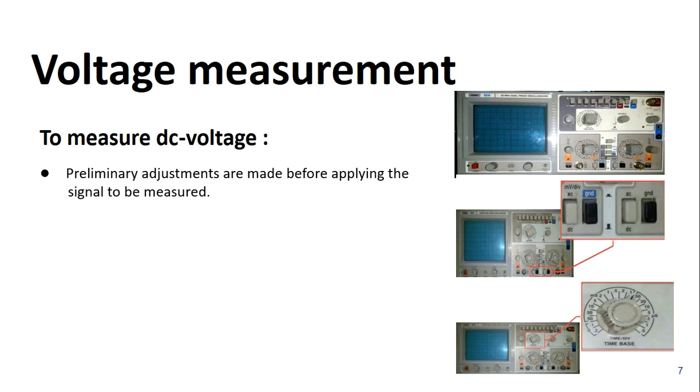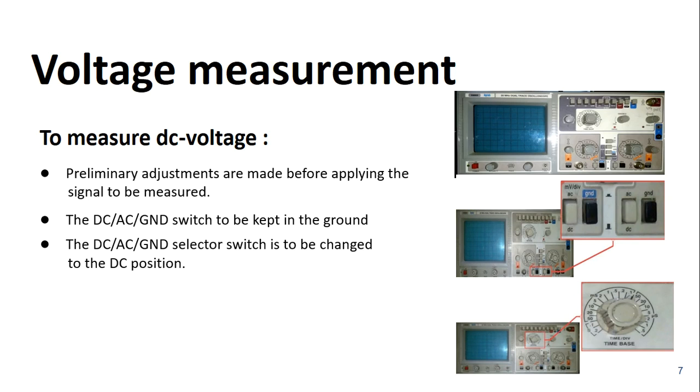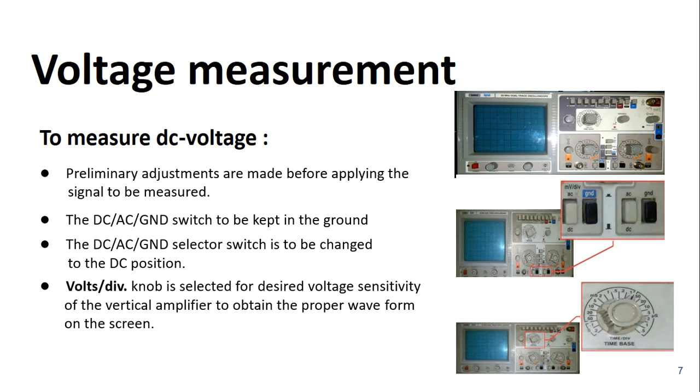Preliminary adjustments are made before applying the signal to be measured. The DC-AC ground switch to be kept in the ground, and the selector switch is to be changed to the DC position. Volts per division knob is selected for desired voltage sensitivity of the vertical amplifier to obtain the proper waveform on the screen. Horizontal controls are used to position and scale the waveform horizontally.